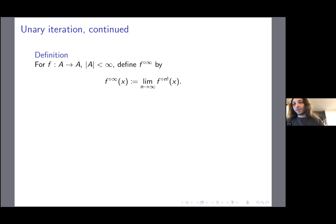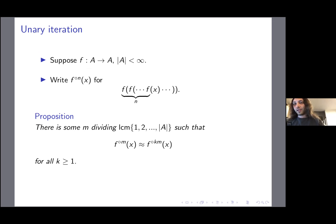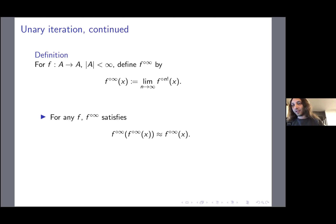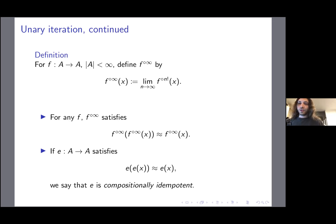I considered writing f composed infinity-factorial, but the notation was getting too long. The point is that this limit is the same as f composed m for that particular m in the proposition. The magic is that for any f, this f-infinity satisfies f-infinity of f-infinity equals f-infinity. A unary function satisfying e(e(x)) = e(x) I call compositionally idempotent, to distinguish it from other meanings of idempotent.